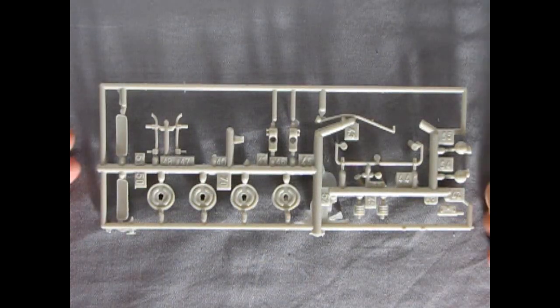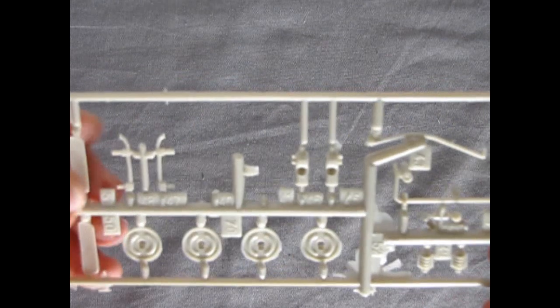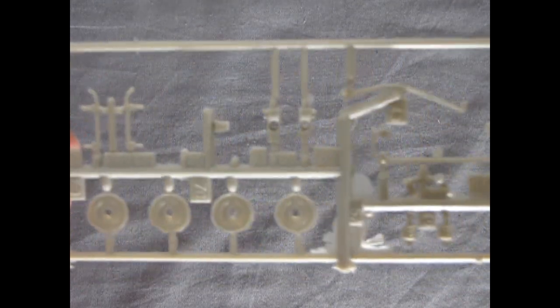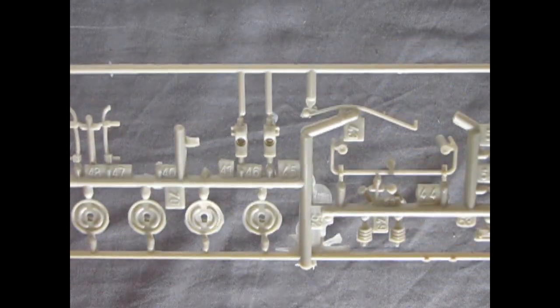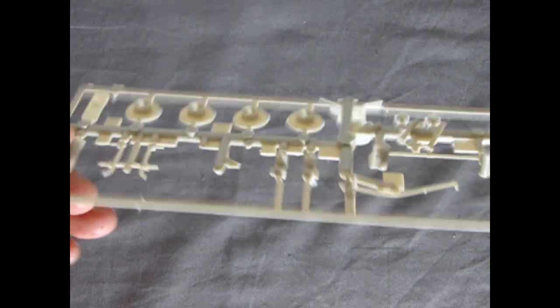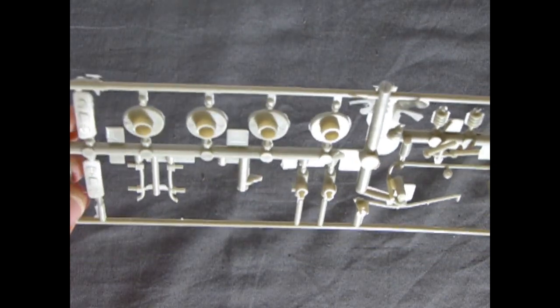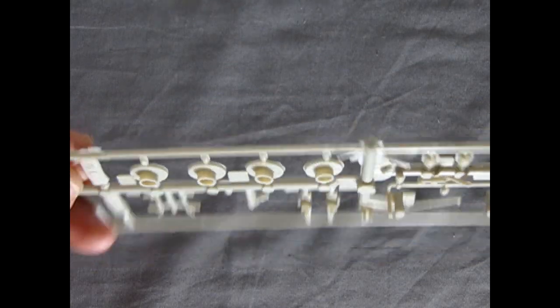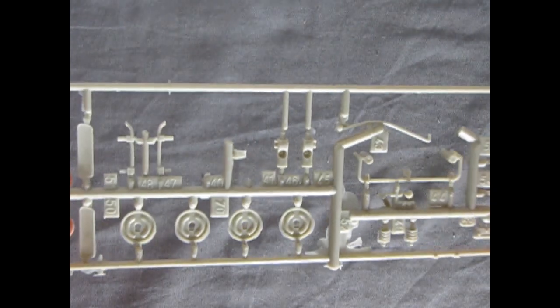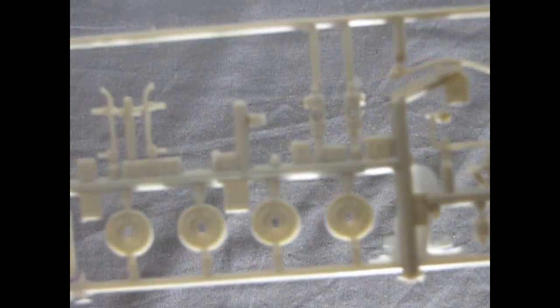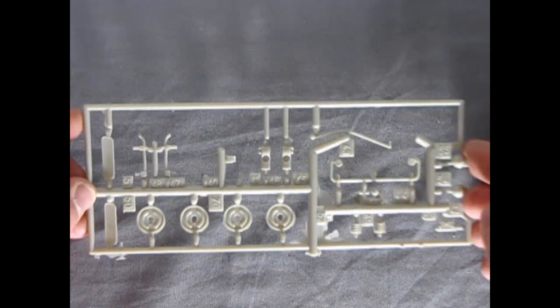Our next parts tree includes the suspension components and the horns as well as our sun visors. And again you can see just how nicely this is all done up. Very beautiful work by Mobius. There are some sink marks on the back of things so you will have to remove them with your file and your hobby blade. But overall the parts are very crisp and very nice looking.